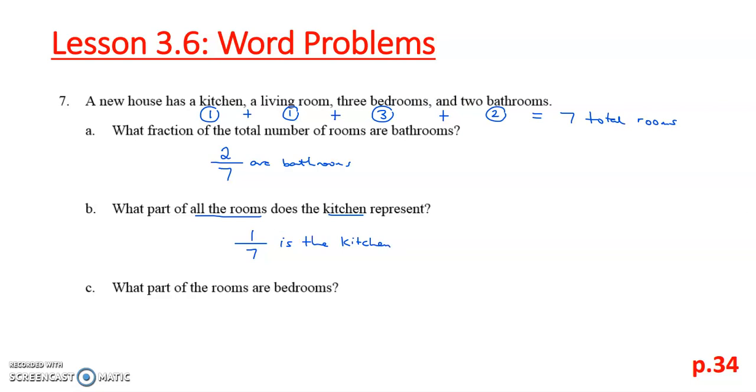And then C, what part of the rooms are bedrooms? We see that we still have the seven rooms, and this time the bedrooms are three. So three-sevenths are bedrooms.